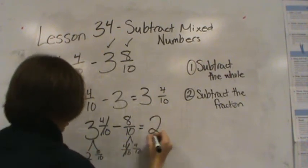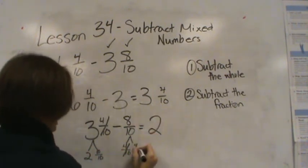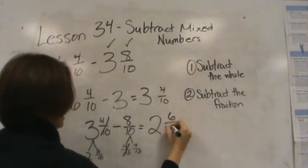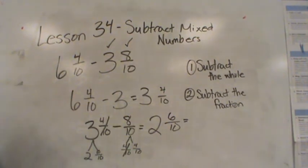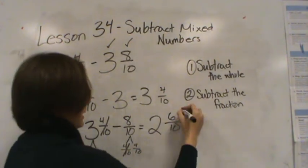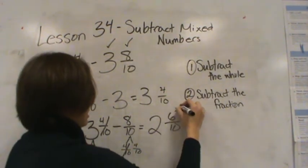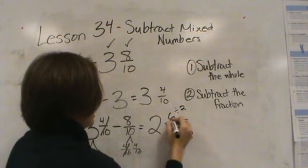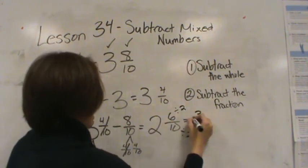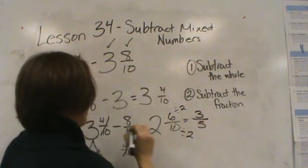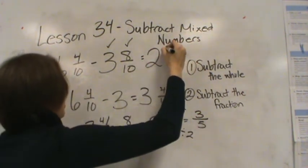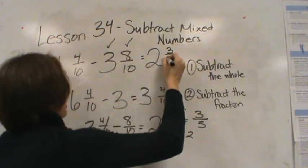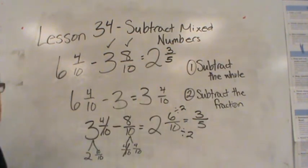This 3 decomposes to 2 and 10/10. My whole is 2. 10/10 minus 4/10 is 6/10. If I put that in simplest form, I divide by the greatest common factor, which is 2, giving me 3/5. So my final answer in simplest form is 2 and 3/5.